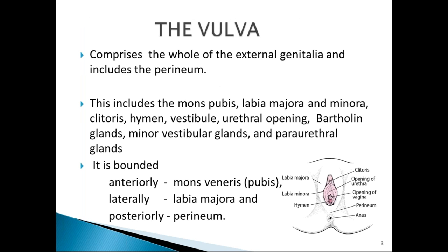External genitalia constitutes the vulva, which includes mons, labia majora, labia minora, clitoris, hymen, vestibule, urethral opening, Bartholin glands, minor vestibular glands, and periurethral glands. The vulva is bounded anteriorly from mons veneris or mons pubis to posteriorly up to the perineum, and laterally it is bounded by two major folds, the labia majora.